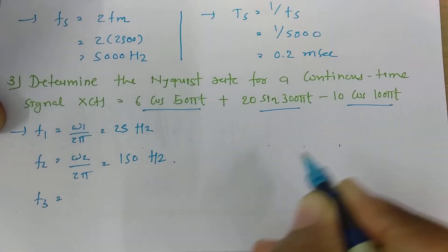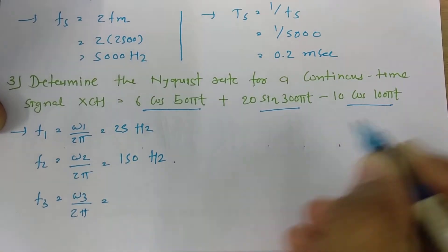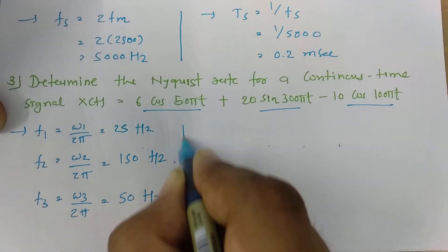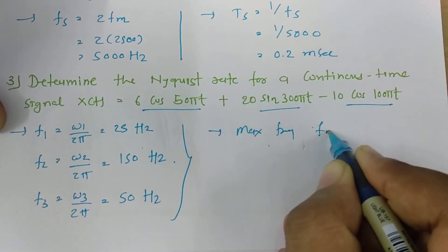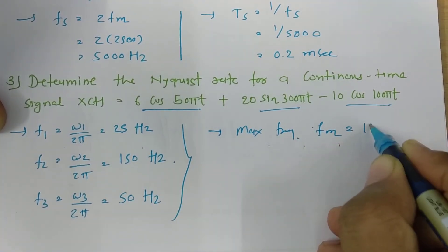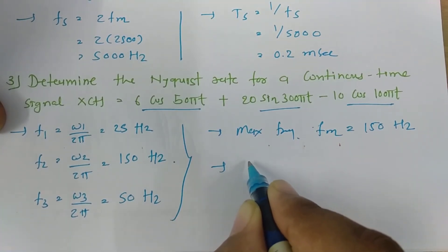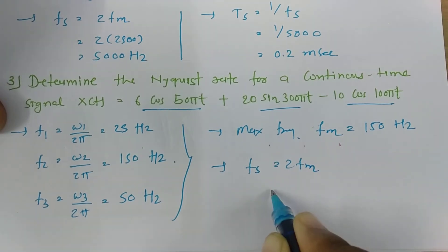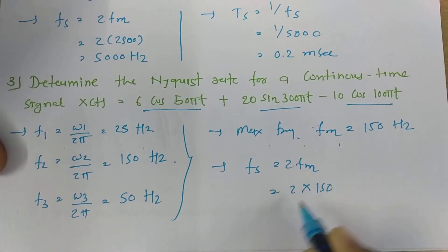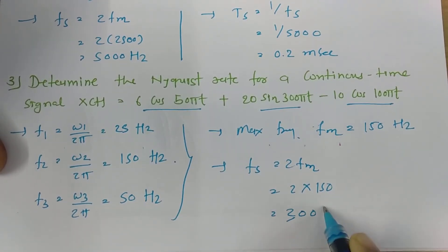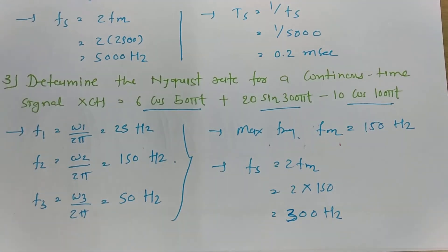The third component gives f₃ = ω₃/2π = 50 Hz. The maximum frequency is fₘ = 150 Hz. Therefore, the Nyquist rate fₛ = 2fₘ = 2 × 150 = 300 Hz.